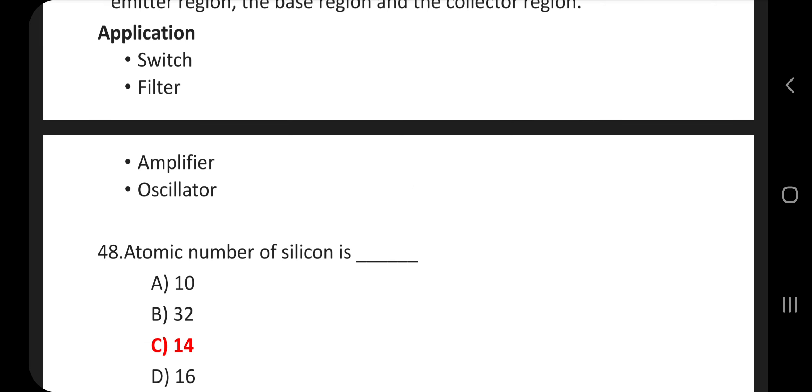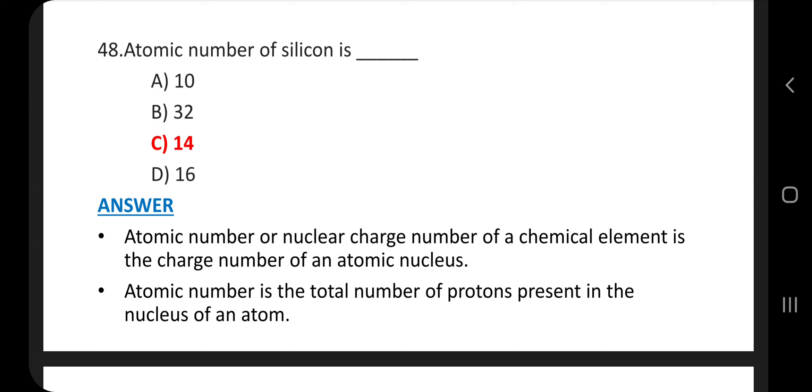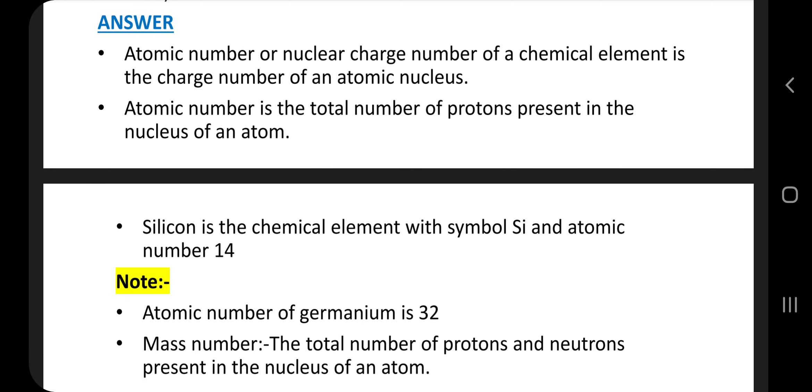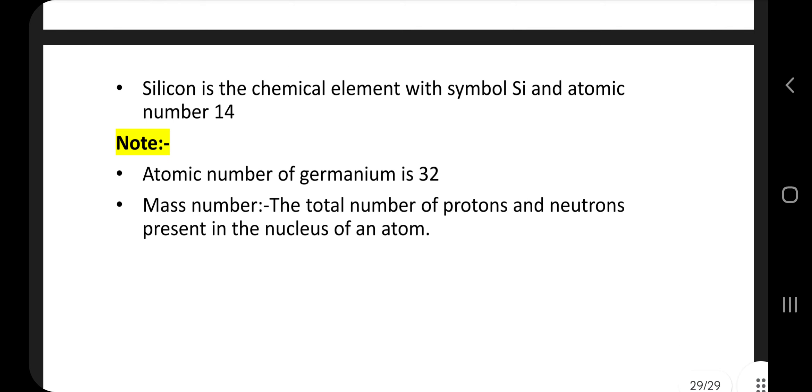The last question of this video is question number 48. Atomic number of silicon is, answer is option C, 14. Atomic number or nuclear charge number of a chemical element is the charge number of an atomic nucleus. Atomic number is the total number of protons present in the nucleus of an atom. Silicon is the chemical element with the symbol Si and atomic number 14. Note, atomic number of germanium is 32. Mass number is the total number of protons and neutrons present in the nucleus of an atom.